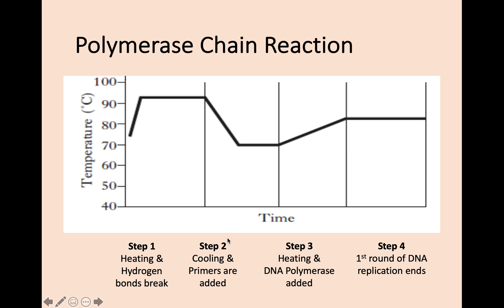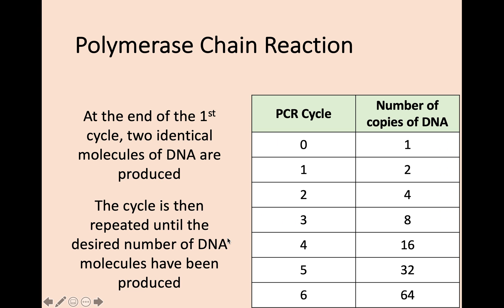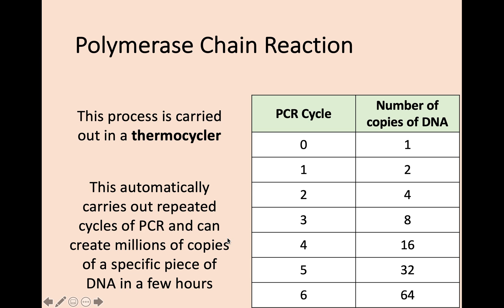At the end of the first cycle, you now have two identical molecules of DNA from the one you started with. The cycle then repeats until you have the number of DNA molecules you want — you can continue to double the copies through every cycle of PCR. The machine used is called a thermocycler, which automatically carries out repeated cycles of different temperatures. Eventually you can create millions of copies of a piece of DNA within a few hours, making it incredibly useful in a lab setting.